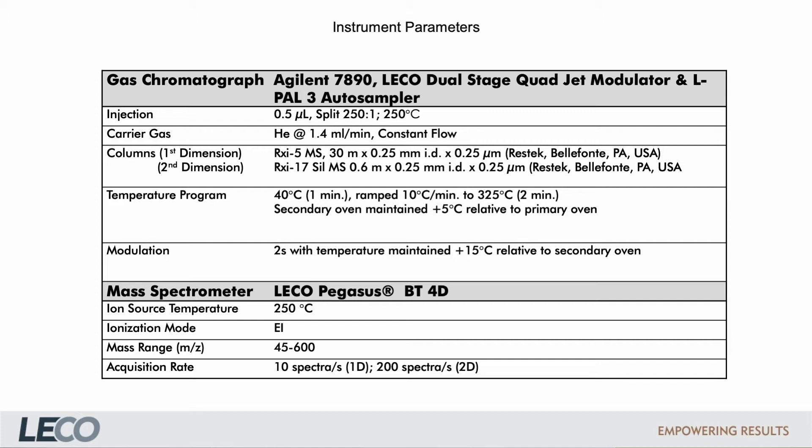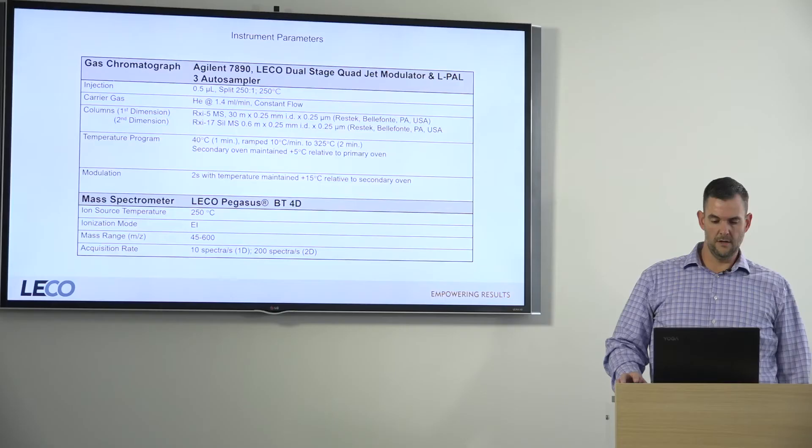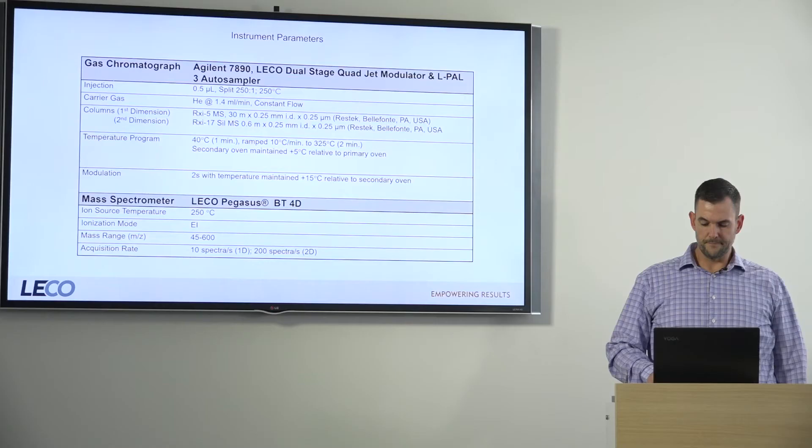The mass range acquired was 45 to 600. Our acquisition rates were 10 spectra per second for the 1D experiments and 200 spectra per second for the 2D experiments. The acquisition rate of 200 spectra per second is important for GCxGC because you end up with very narrow second dimension peaks, and you need high acquisition rates to generate enough data points to appropriately define the peak shape.